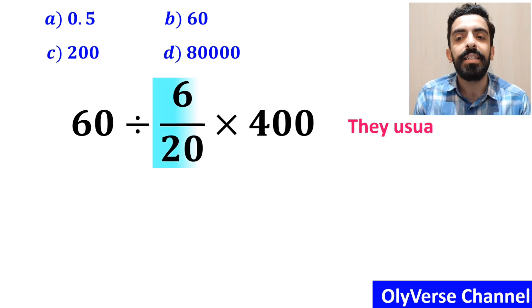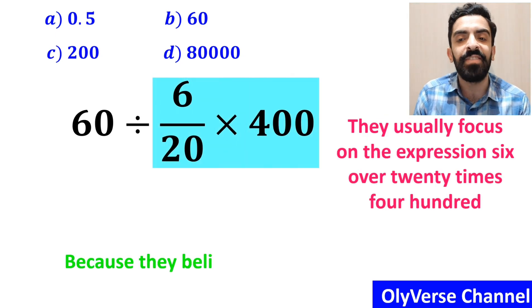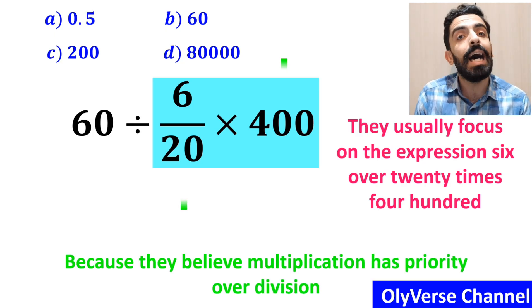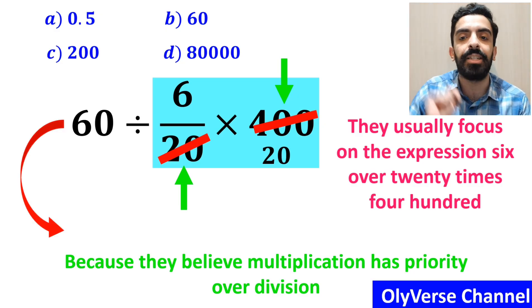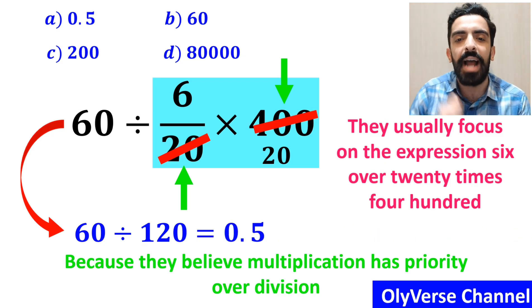The next step they usually focus on the expression 6 over 20 times 400 because they believe multiplication has priority over division. As you can see in the image, they very easily cancel out 400 with the 20 in the denominator and write this expression as 60 divided by 120, which ultimately gives them the answer 0.5.